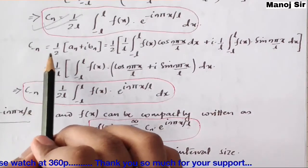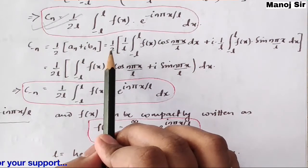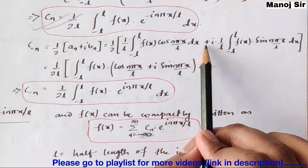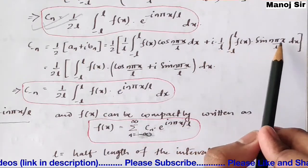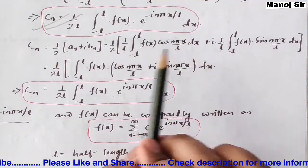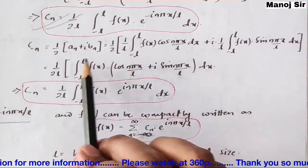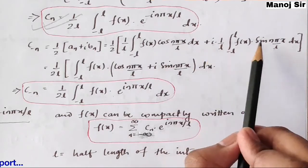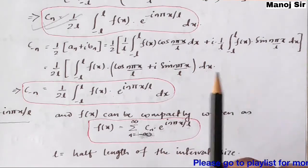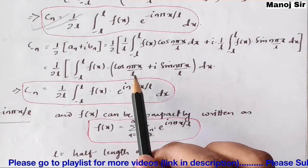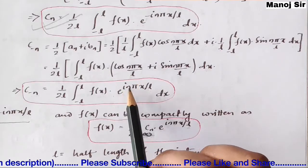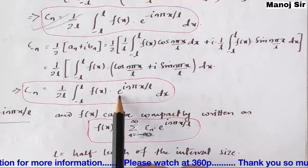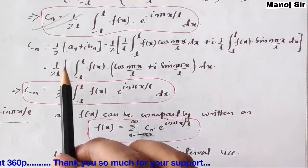For c₋ₙ: c₋ₙ = (1/2)(aₙ + ibₙ) = (1/2)[(1/l)∫₋ₗˡ f(x) cos(nπx/l) dx + i·(1/l)∫₋ₗˡ f(x) sin(nπx/l) dx]. This gives (1/(2l))∫₋ₗˡ f(x)[cos(nπx/l) + i sin(nπx/l)] dx. Using cos θ + i sin θ = e^(iθ): c₋ₙ = (1/(2l)) ∫₋ₗˡ f(x) e^(inπx/l) dx.